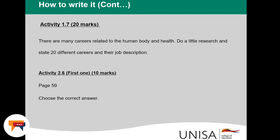Activity 1.7 is for 20 marks. In this activity, you must pay special attention to what you are required to do. There are many careers related to human body and health. Do legal research and state 20 different careers and their job description — describe what a person does in that specific career. They must be related to human body and health. I don't want to see things such as gym instructors. Read further in your study guide to understand the context, and ensure that you do not lose marks here.